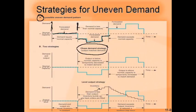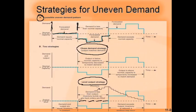The next strategy is level output strategy. As the name suggests, it doesn't matter what the demand is — we try to keep output constant. In the second period when demand decreases, people continue to produce at the normal level. Because demand is less and production continues at the same level, inventory grows. In the third period when demand is more, it can initially be met by the inventory that was built up — that's how the match between capacity and demand is made over the longer run.